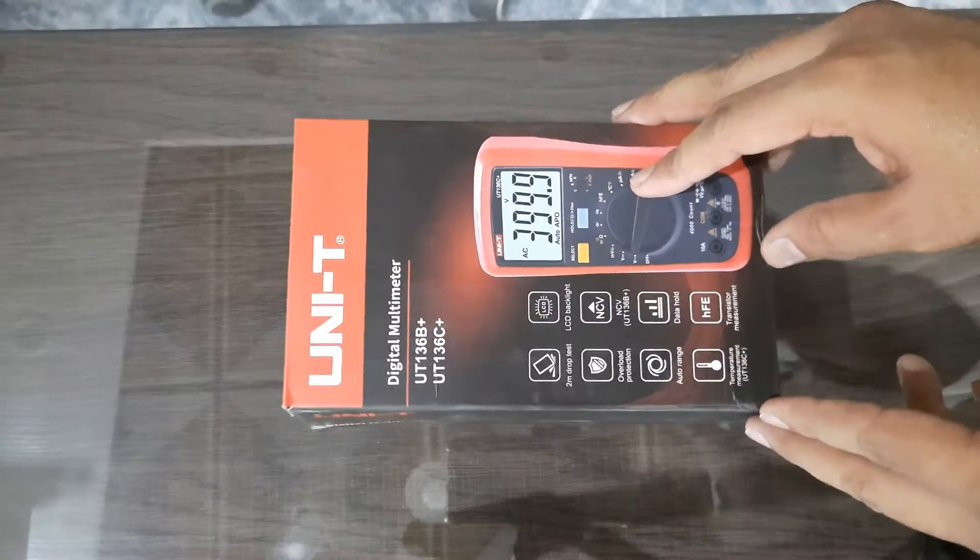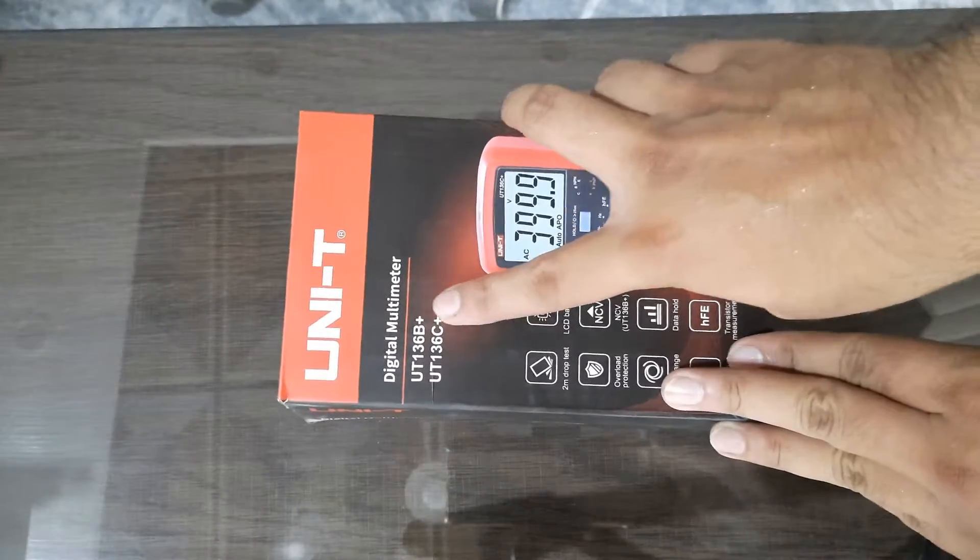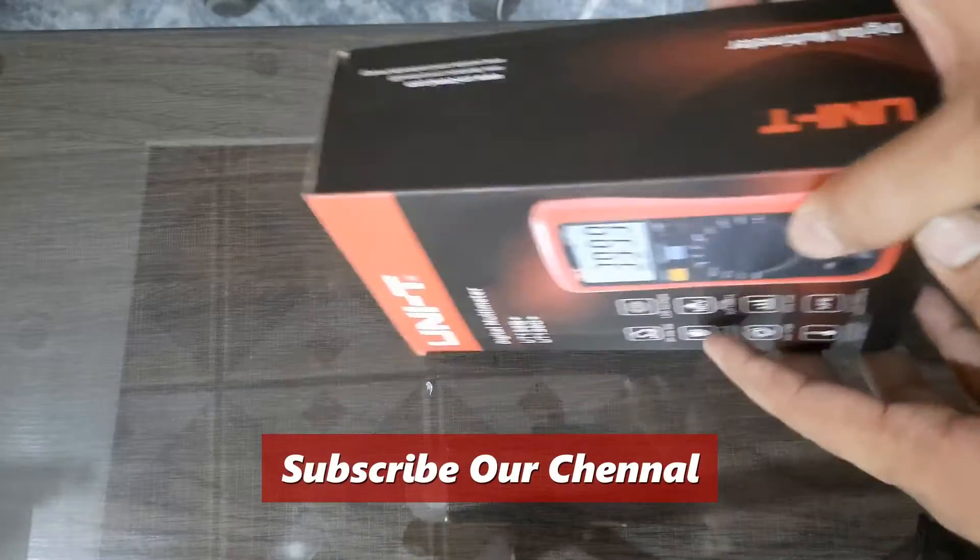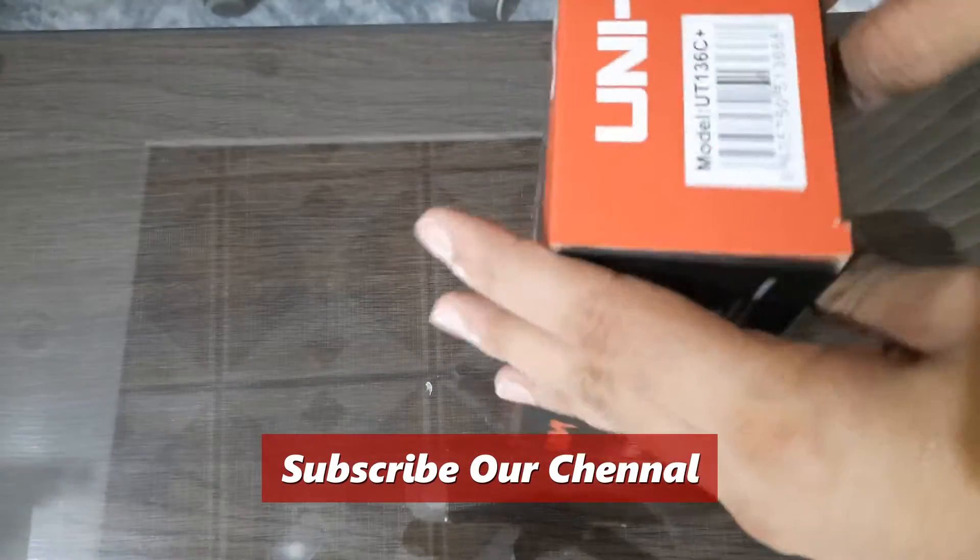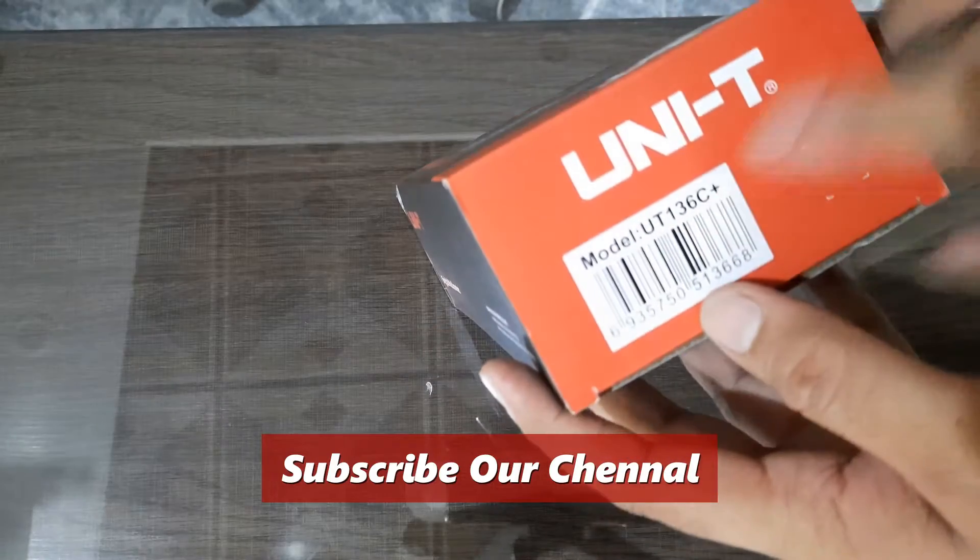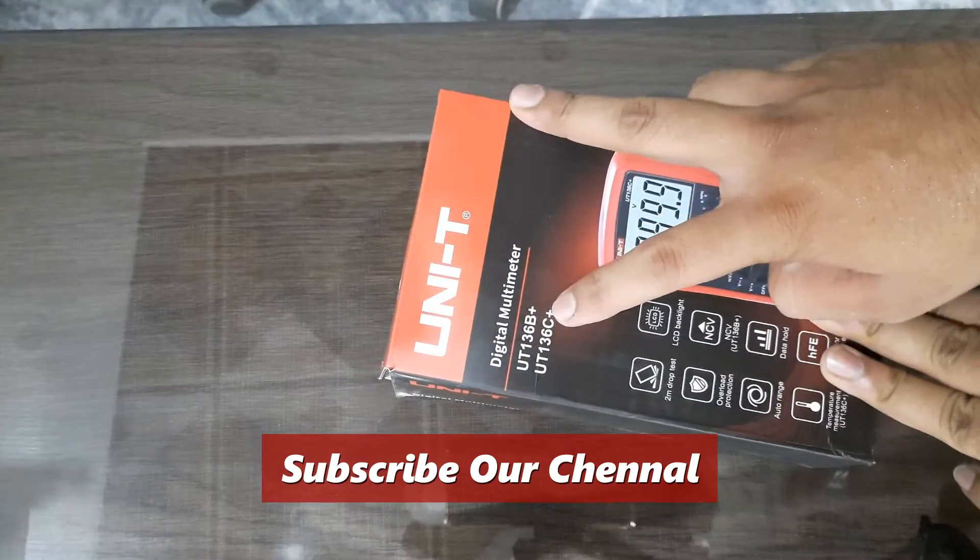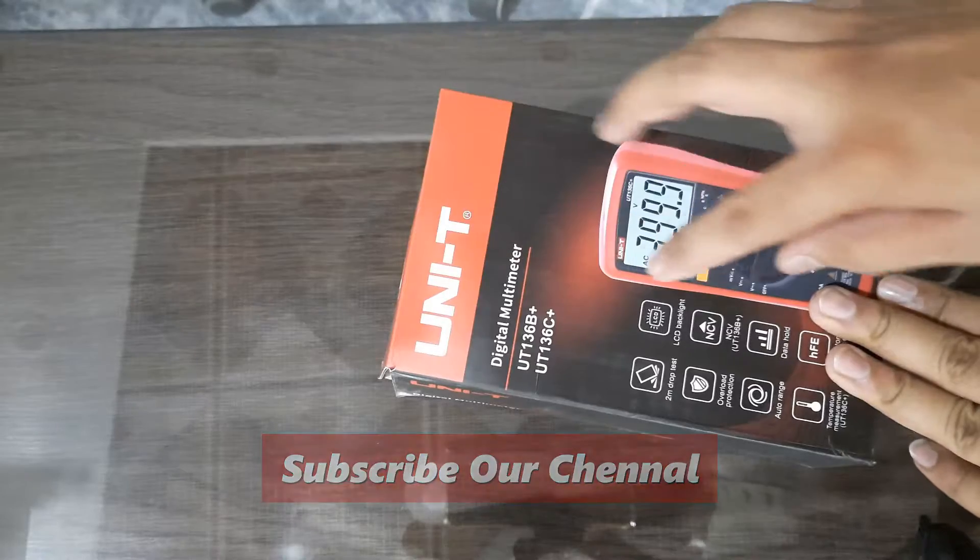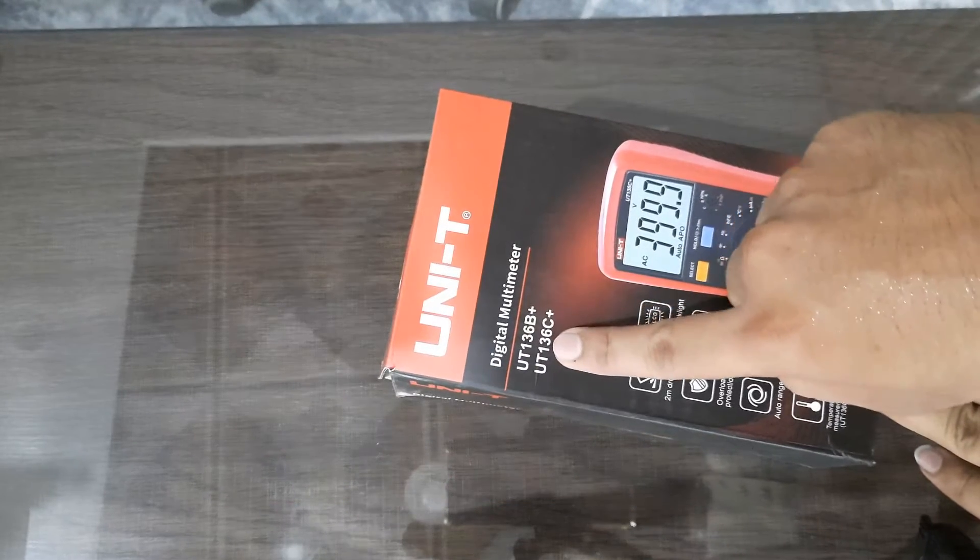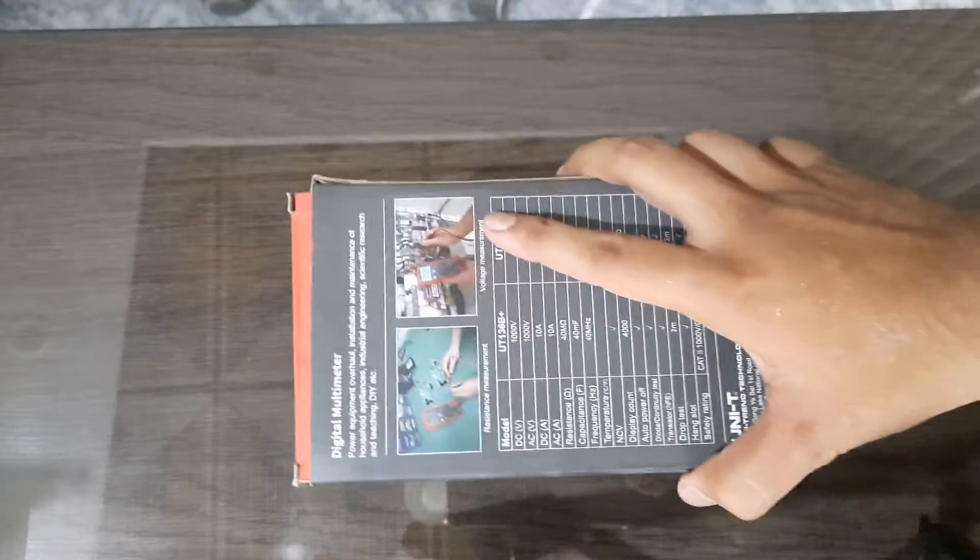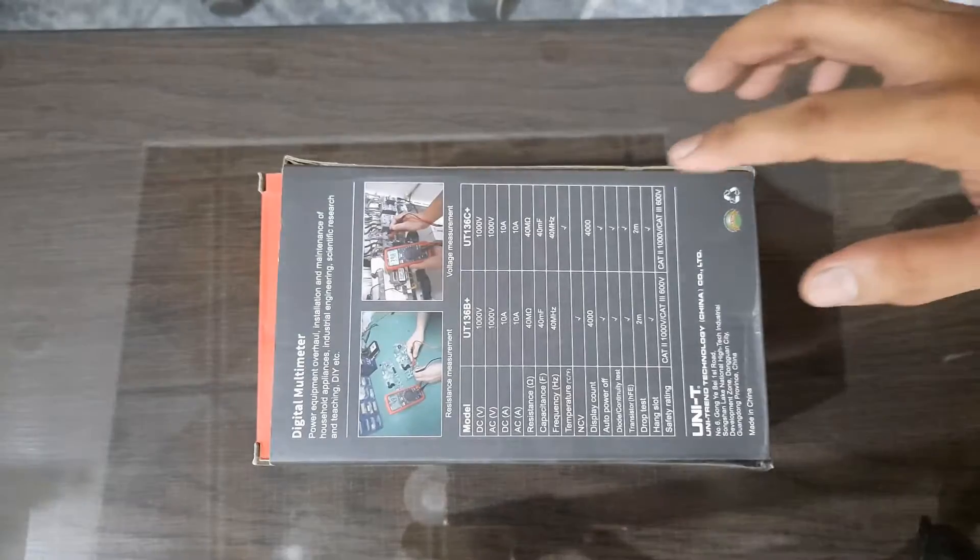This is my new Unity multimeter, UT-136B+ and UT-136C+. Both are the same model but have a little bit different features. This is the updated version, this one is the old version. Now you can see what the difference is.